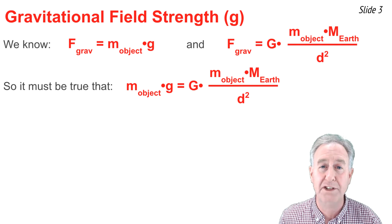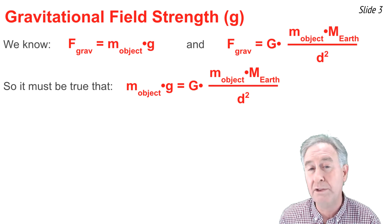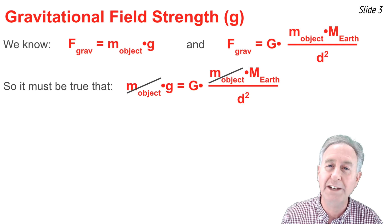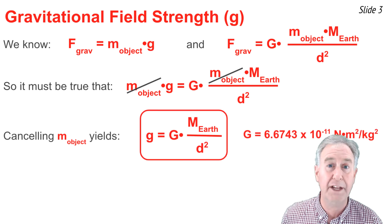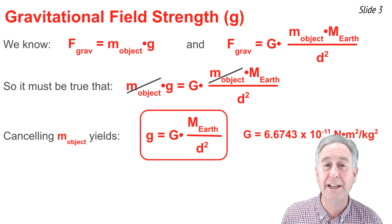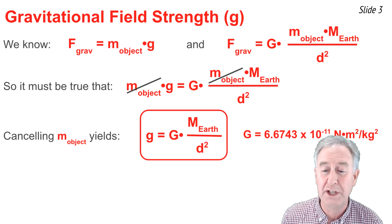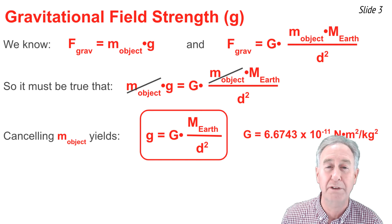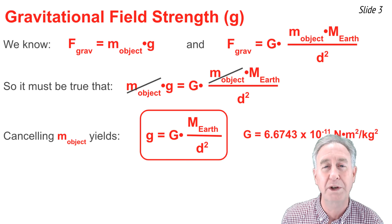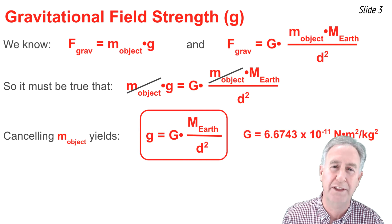The mass of the object appears on both sides of the equation, so I can divide through by the mass of the object and cancel it. When I'm done, I now have an equation for calculating the gravitational field strength g. Little g equals the universal gravitation constant, big G, multiplied by the mass of the Earth divided by the distance squared, where d is the distance separating the centers of Earth and the object.